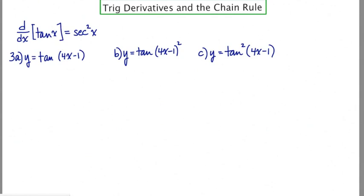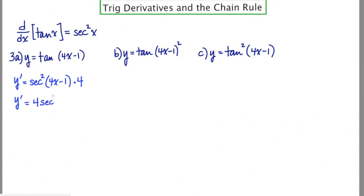We'll start with the problem y equals tan(4x − 1). The derivative is y prime equals secant squared(4x − 1) times the derivative of the argument, which is 4. Cleaning this up, the derivative is equal to 4 secant squared(4x − 1).